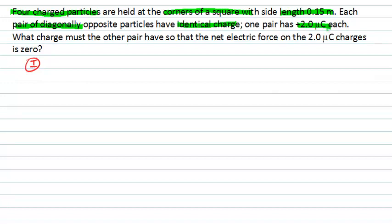And we actually know the charge on one of those diagonal pairs. The question is actually asking us to calculate the charge we need so that we have a net electric force of zero on one of those pairs of charges. So it should be clear here that we're dealing with forces on charged particles. The principle we'll be using there is an application of Coulomb's Law.